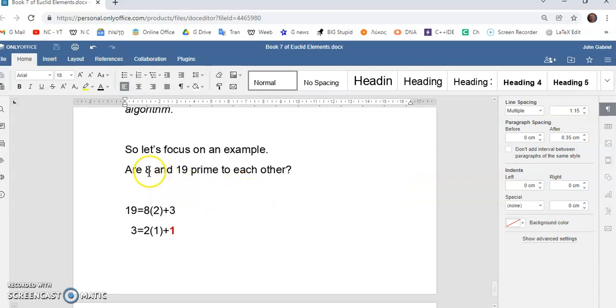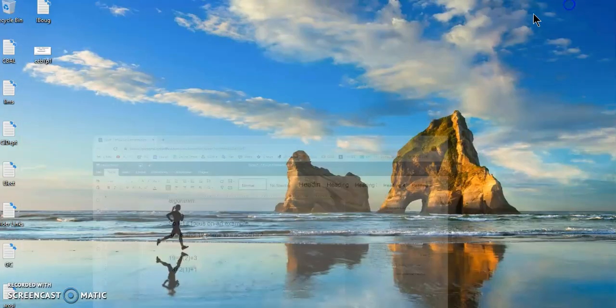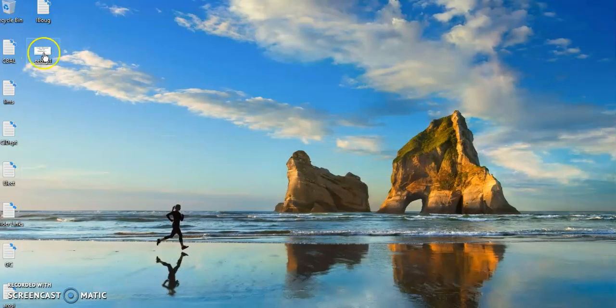So, a quick example, are 8 and 19 prime to each other? So, this is how we do it. We look at the dividend. So, I'm going to just pull this up here for a second.